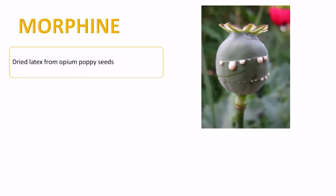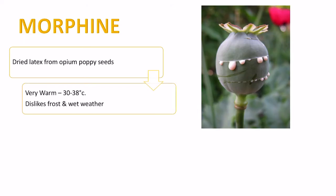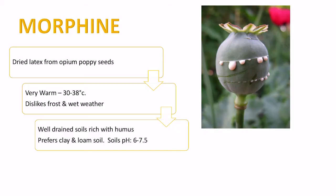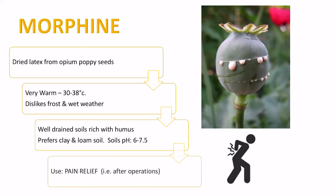Another medicine is morphine, from opium poppy seeds — it's the dried latex that comes out of the seeds. It again needs warm conditions, over 30 degrees, and doesn't like wet weather or frost. It prefers drained soils with lots of humus — that organic matter from dead leaves recycled in the top layer of soil — and prefers clay and loam with a slightly alkaline pH. It's used for pain relief in operations and military contexts. From opium and poppy seeds you can also make codeine, and on the worse end, heroin.